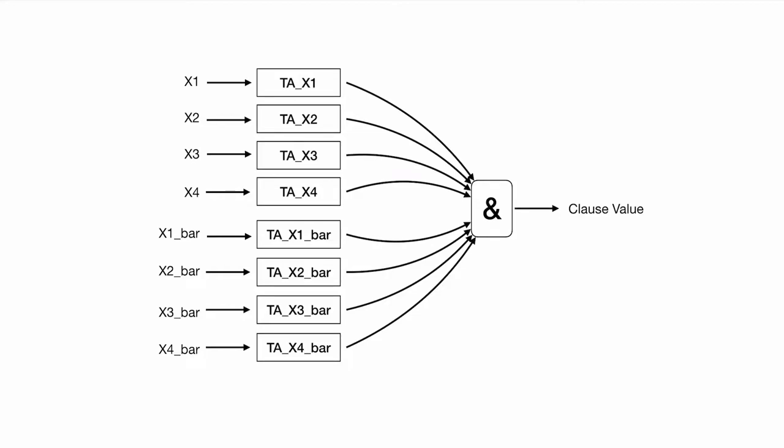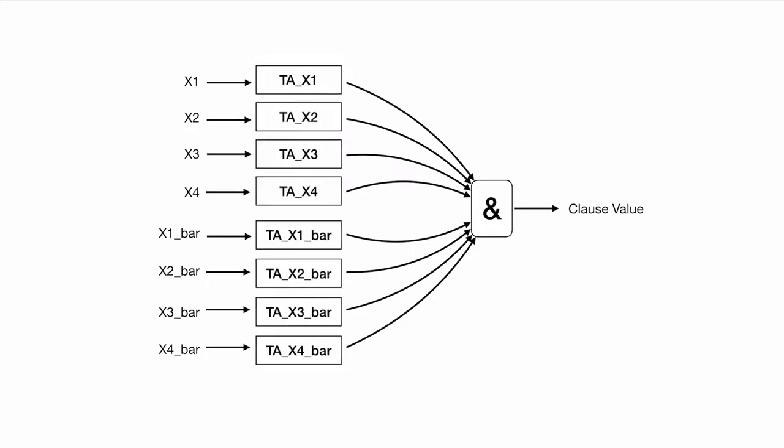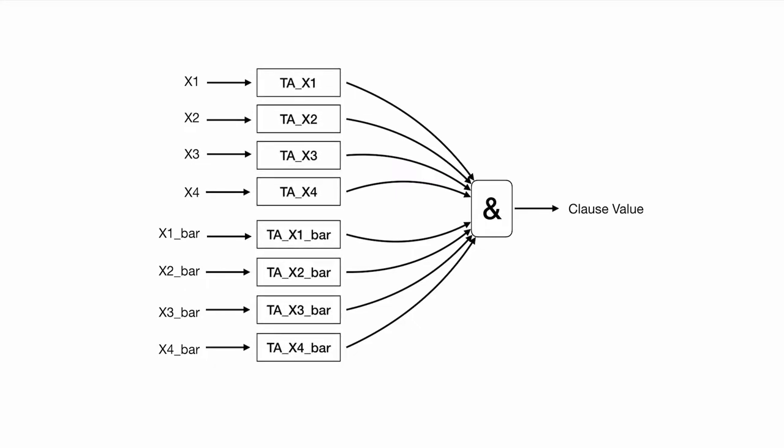Last time, we talked about how to calculate clause value using the state of TAs combined with the literals to get my clause value. But this is one simple clause representation. If we want to have multiple clauses, then how can we do it? Well, if we see the entire TAs, eight of them, as a team,